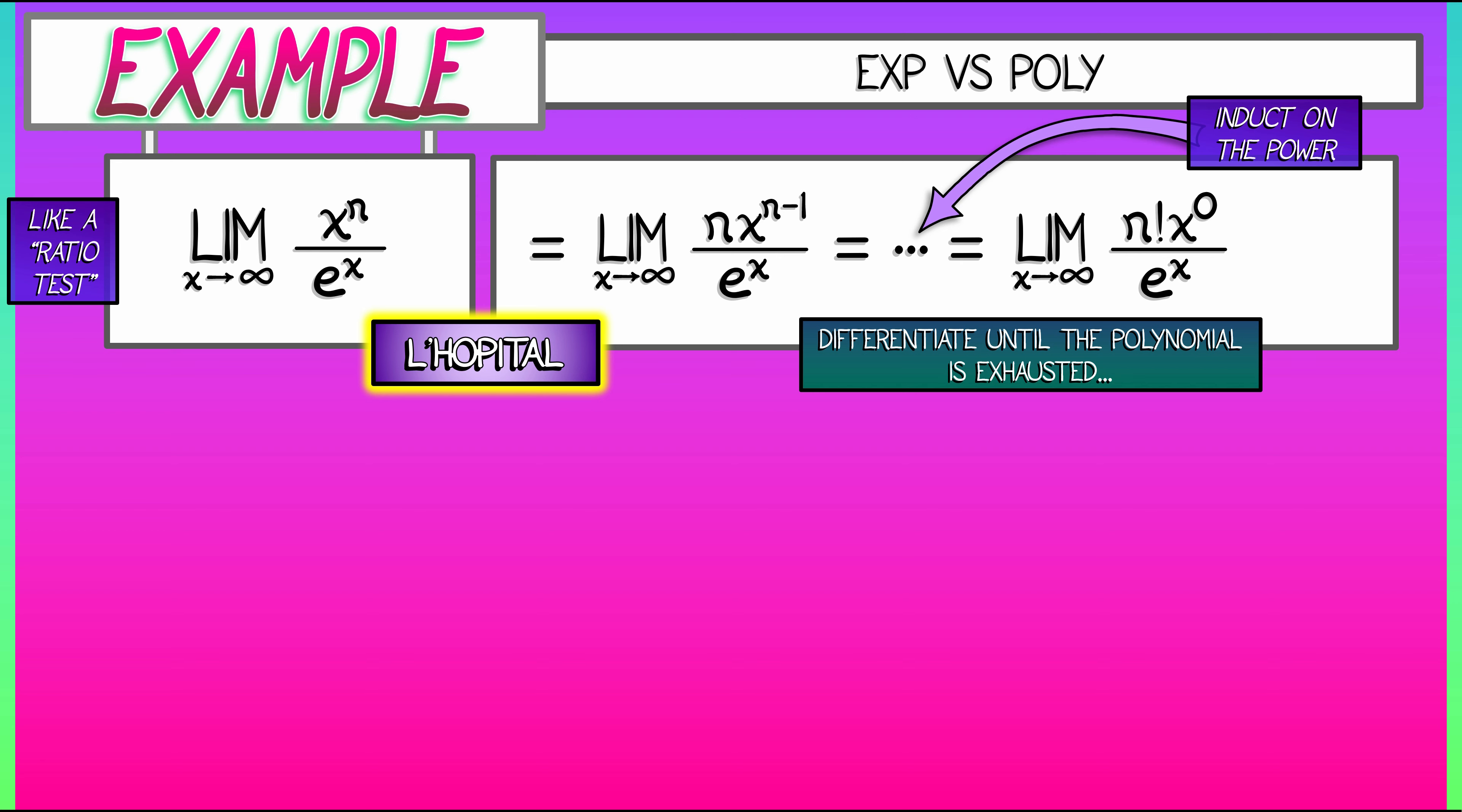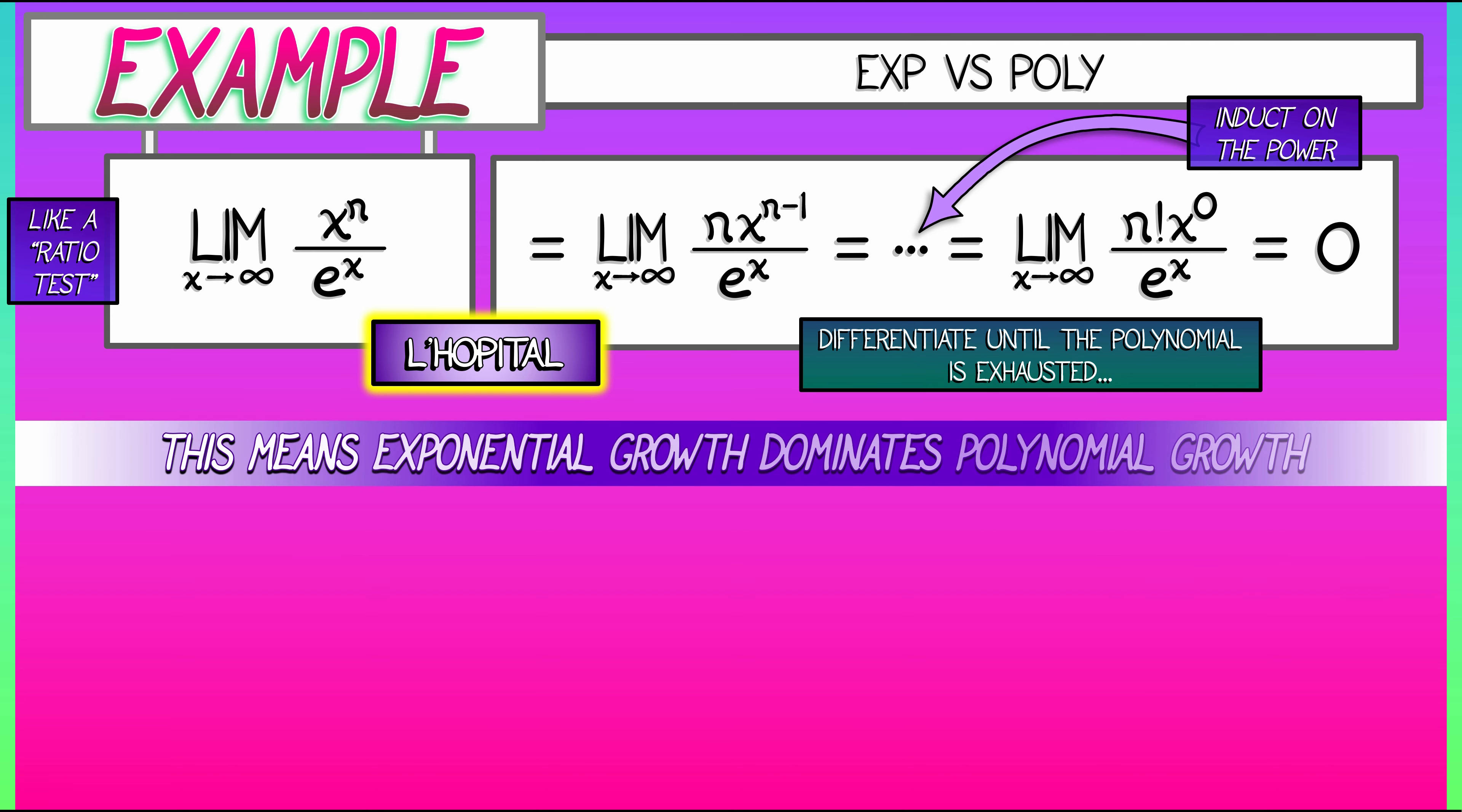The denominator goes to infinity. This gives us a limit of 0. And what that means is that exponential growth dominates polynomial growth. That e to the x is going to infinity so much faster than any polynomial grows to infinity.